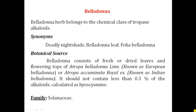Next is botanical source. Belladonna consists of two parts: one is leaf and second is flowering tops. It consists of fresh or dried leaves as well as the flowering tops of Atropa belladonna and Atropa acuminata. It should not contain less than 0.3% of alkaloids, calculated as hyoscyamine. The active constituent is hyoscyamine.